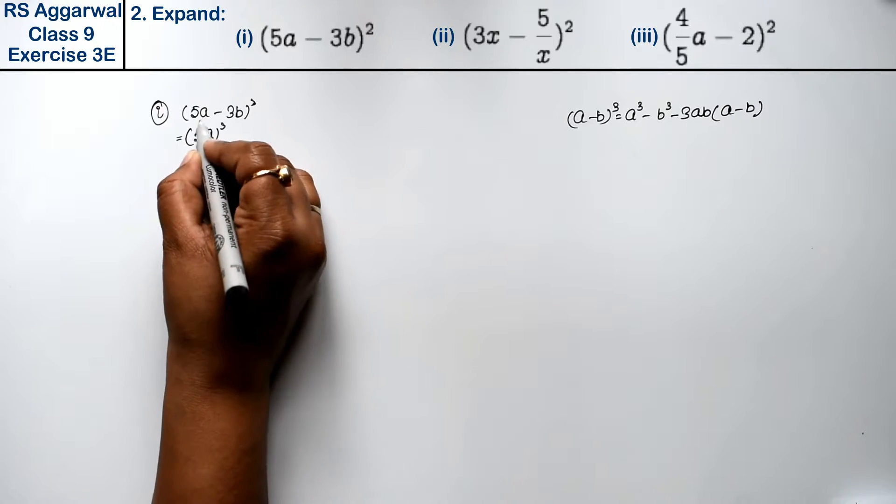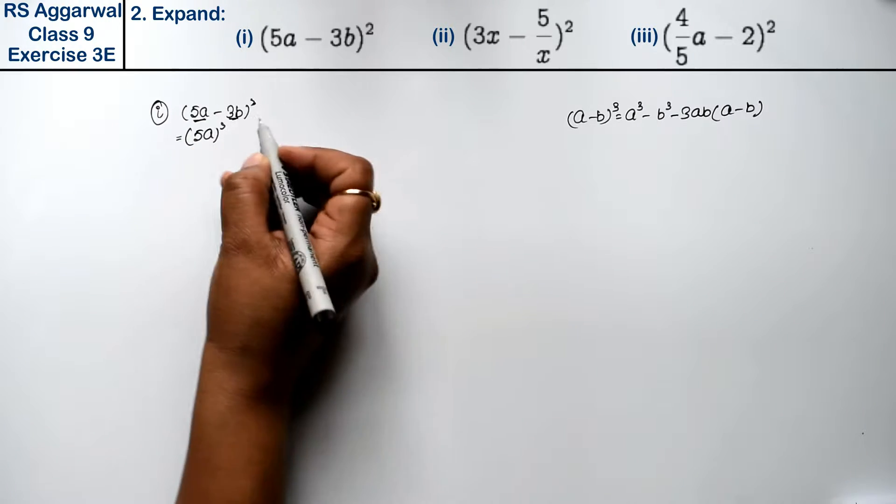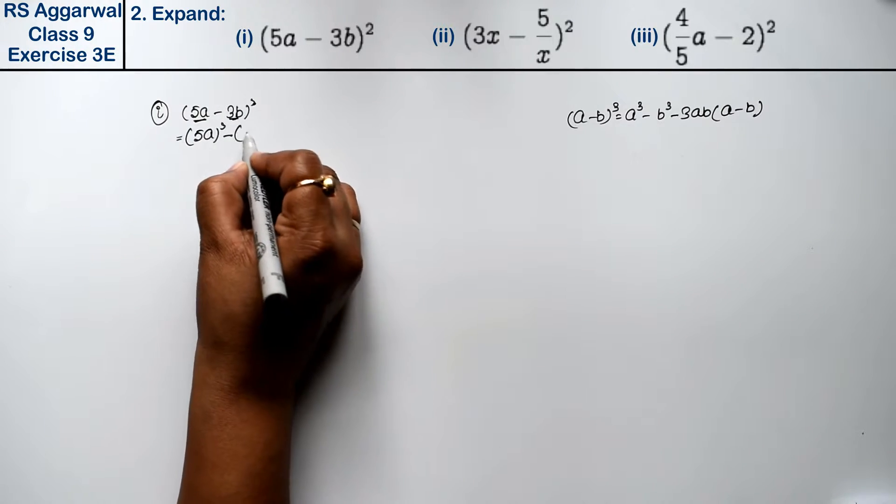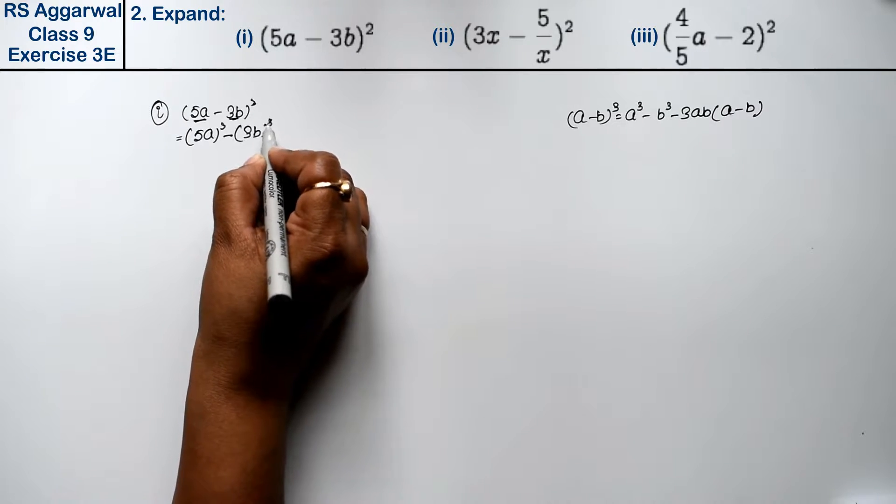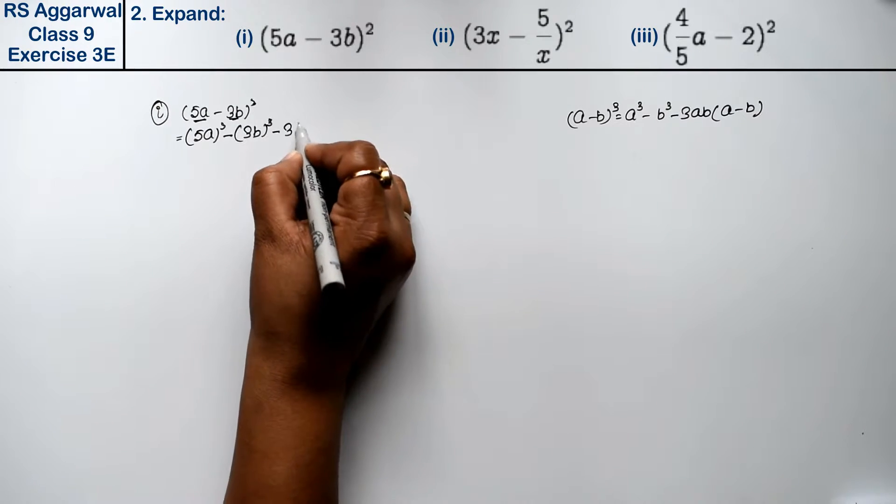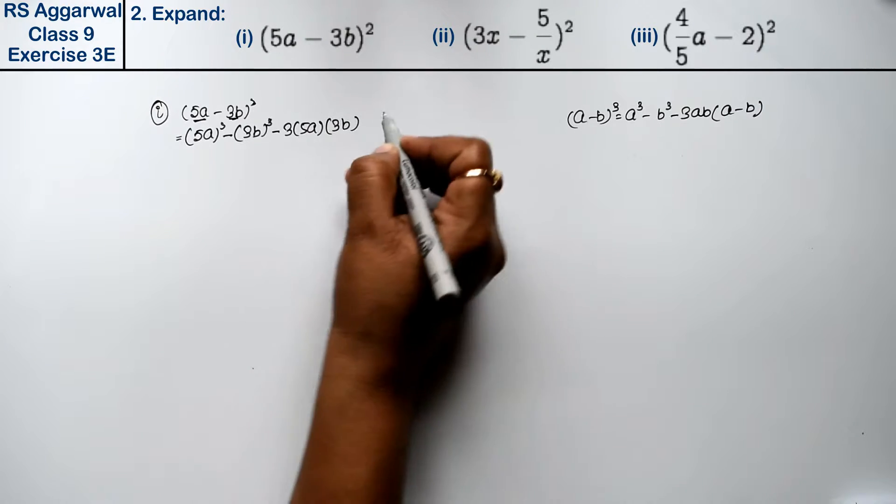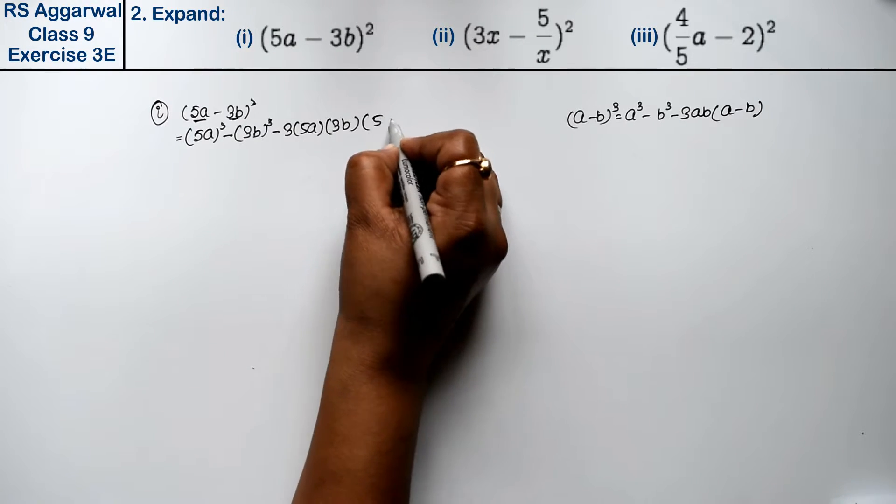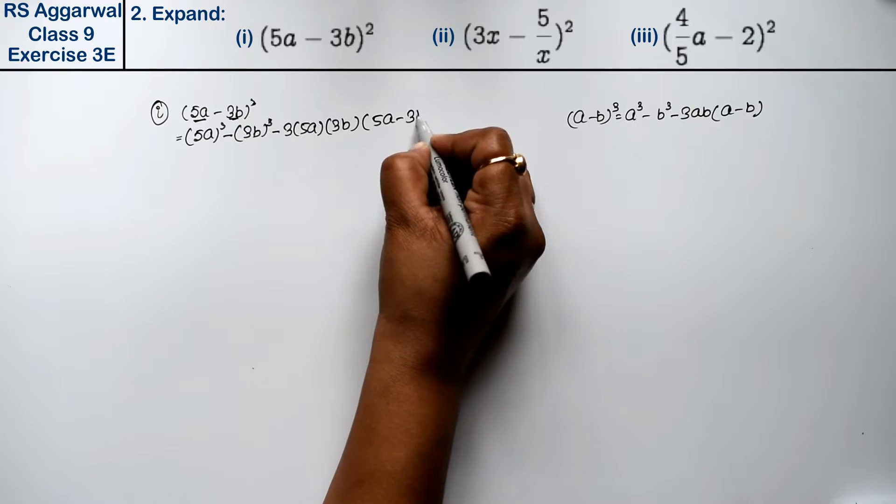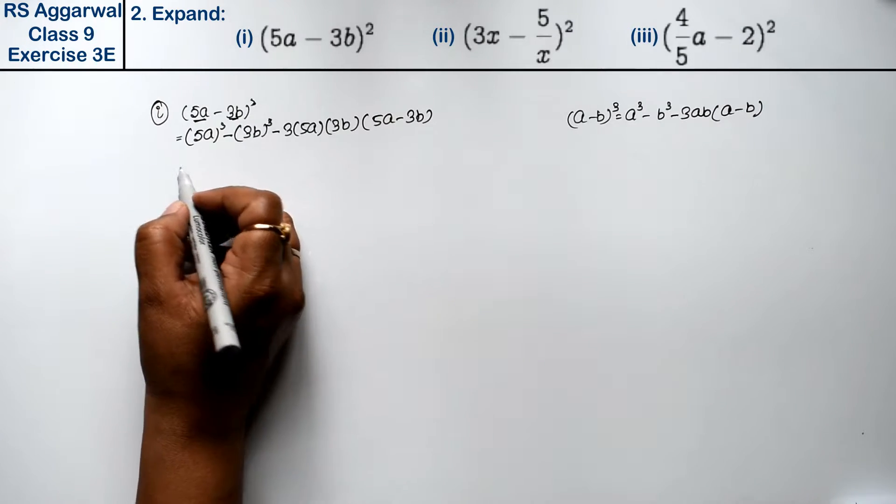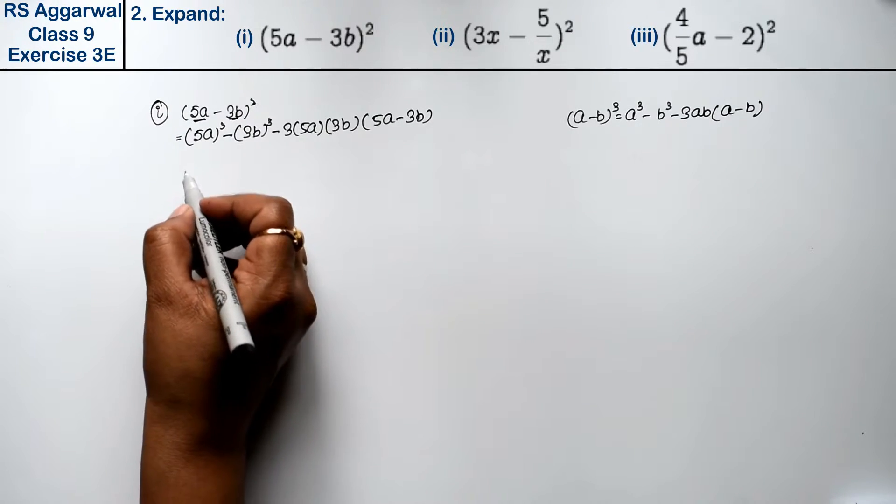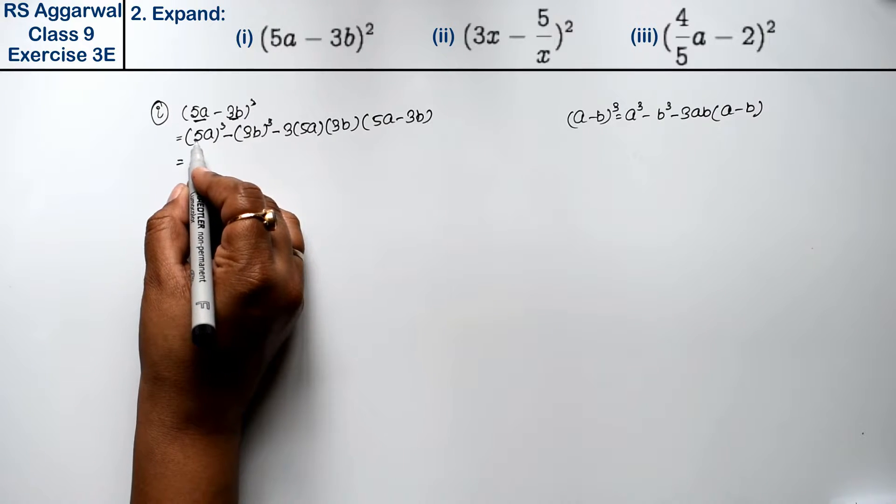(5a)³ - yaha a is 5a aur b is 3b - minus (3b)³ minus 3ab(a - b). A ki jagah 5a likhna hai is formula mein aur b ki jagah 3b likhna hai.